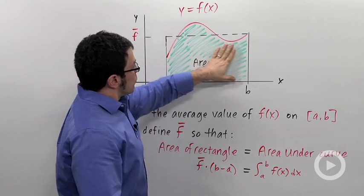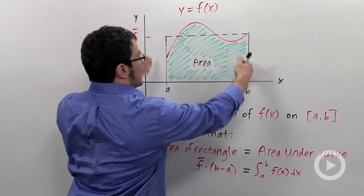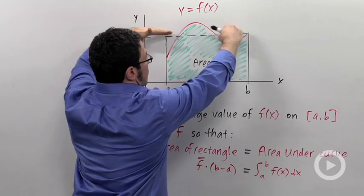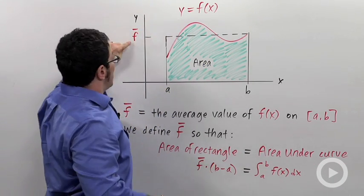Now imagine that this region is a body of water sitting in a tank. And when the water settles, it'll find a level. The height of that level is going to be our average value, f bar.